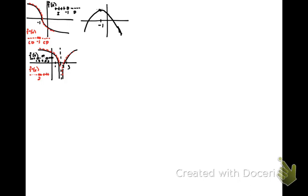With those facts in mind, here is a possible graph of the function, with key values at 1.5, 2, and 2.5. Our function should be increasing until 1.5, then decreasing — concave down through that section. After the vertical asymptote at 2, it should be concave up, decreasing until 2.5, then increasing after that. This is just one possible graph — as long as it fits the parameters, it's legitimate.